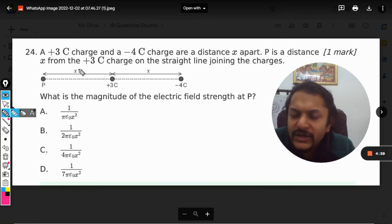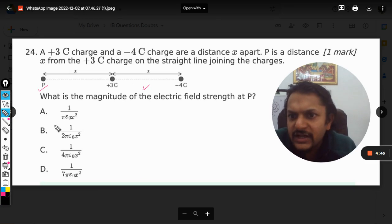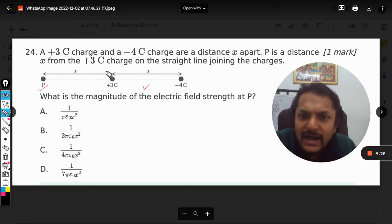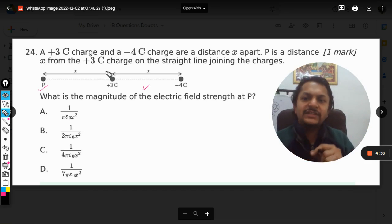Dear students, let's see what's in this question. A +3 C charge and a -4 C charge are a distance x apart. Point P is x distance from the +3 C charge on the straight line joining the charges. What is the magnitude of the electric field strength at P? We need to find the magnitude of electric field strength at P.